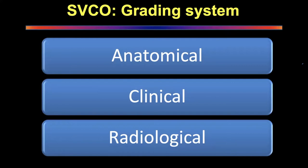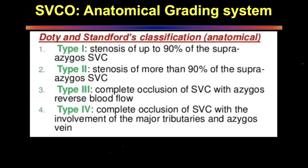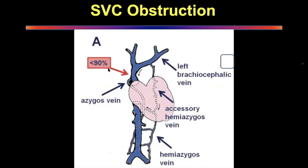The anatomical grading system is the Doty-Stanford system published around 2008. It divides stenosis into four types: Type 1 is up to 90% stenosis of supra-azygous SVC; Type 2 is more than 90% stenosis of supra-azygous SVC; Type 3 is complete occlusion of the SVC with azygous reverse blood flow; Type 4 is complete occlusion of the SVC with involvement of major tributaries and the azygous vein. Type 4 carries the worst symptoms because the obstruction extends into the azygous.